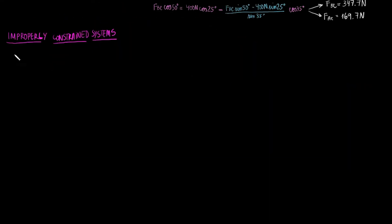Now, I want you to be careful about one specific type of system. This system is called improperly constrained. It happens when the number of balance equations equals the number of unknowns. However, the unknowns we need to solve for cannot be solved with the equations we have.